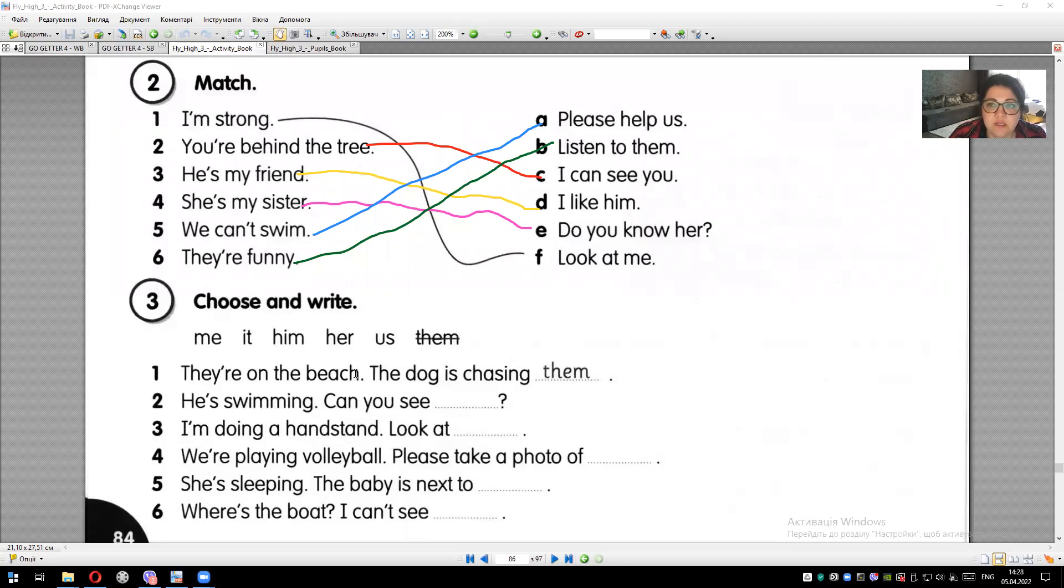They are on the beach. They're on the beach. The dog is chasing them. The dog is chasing them. He's swimming. He's swimming. Can you see? Can you see? Who? If he is swimming, he's swimming. Yes. Can you see him? Can you see him?